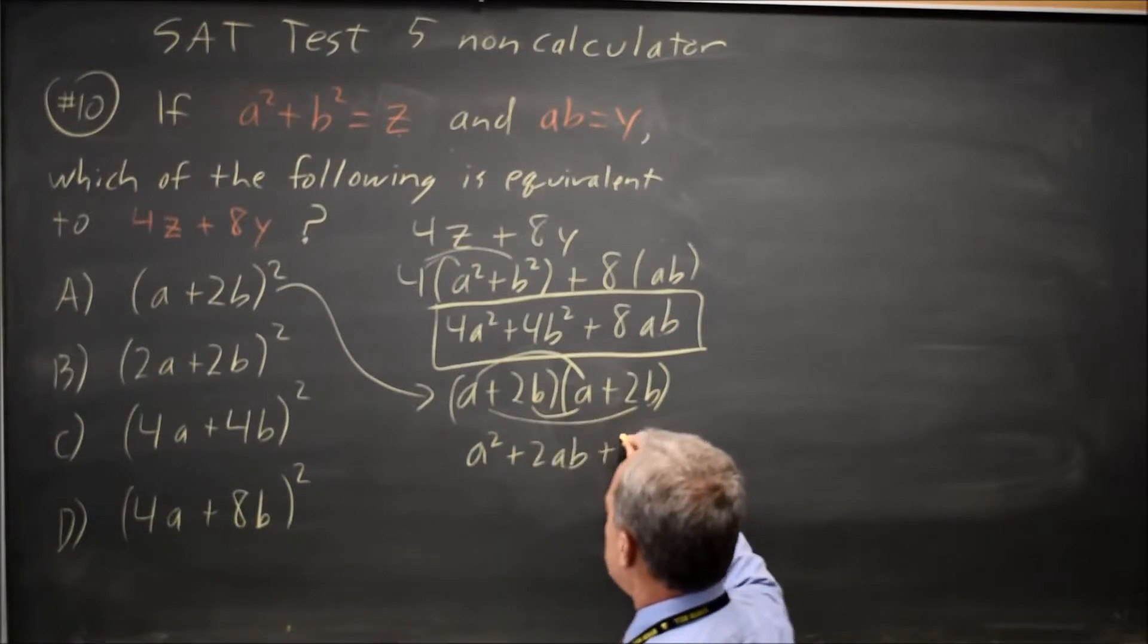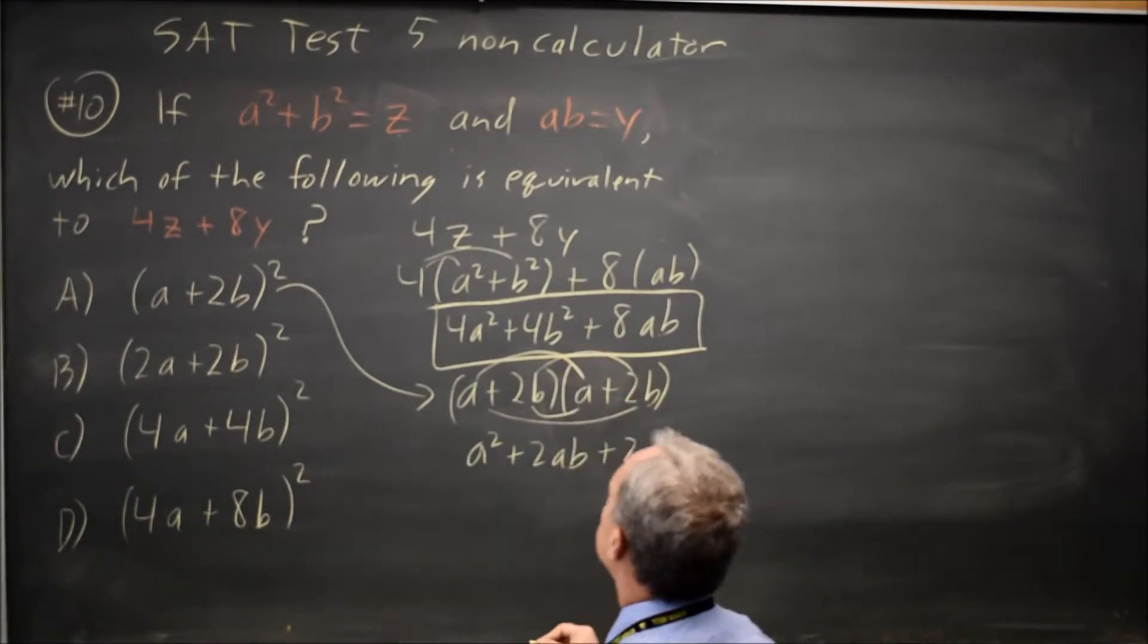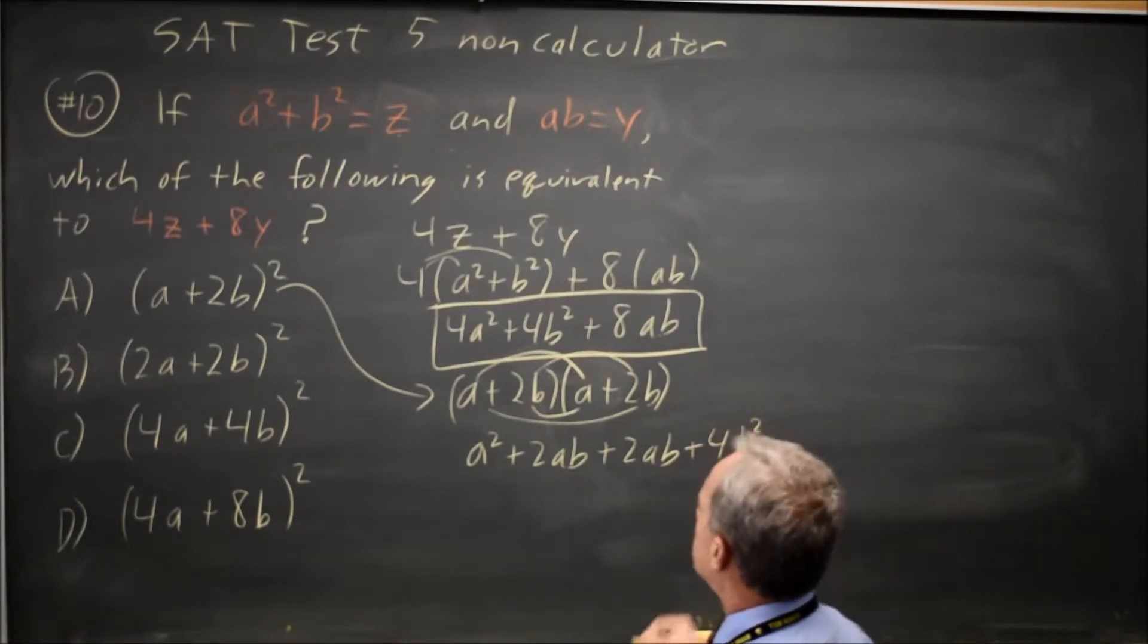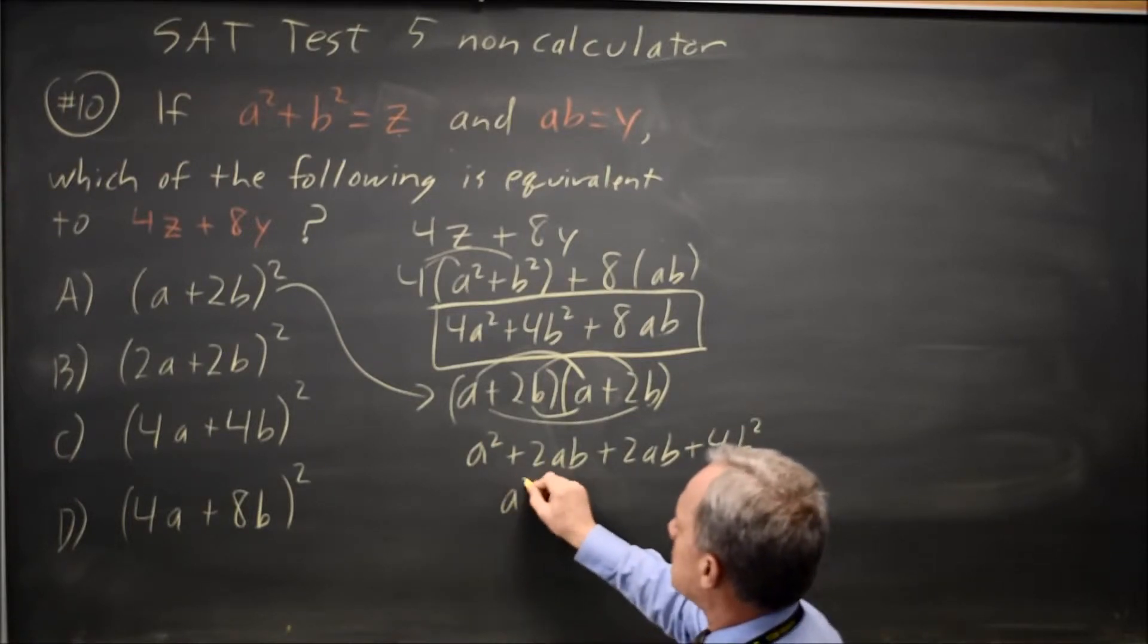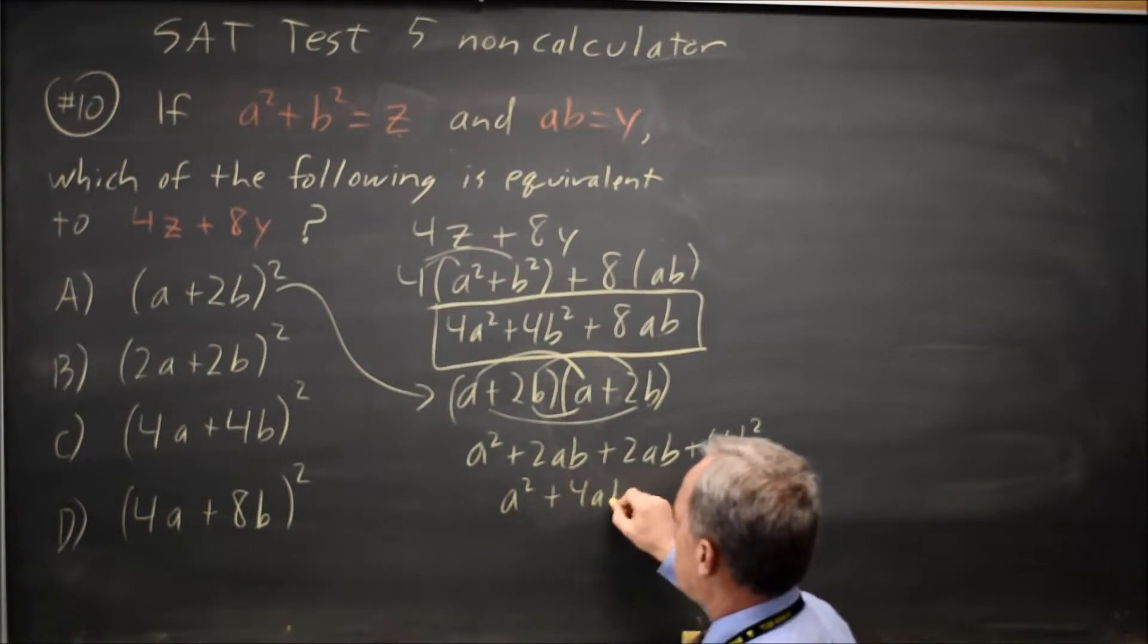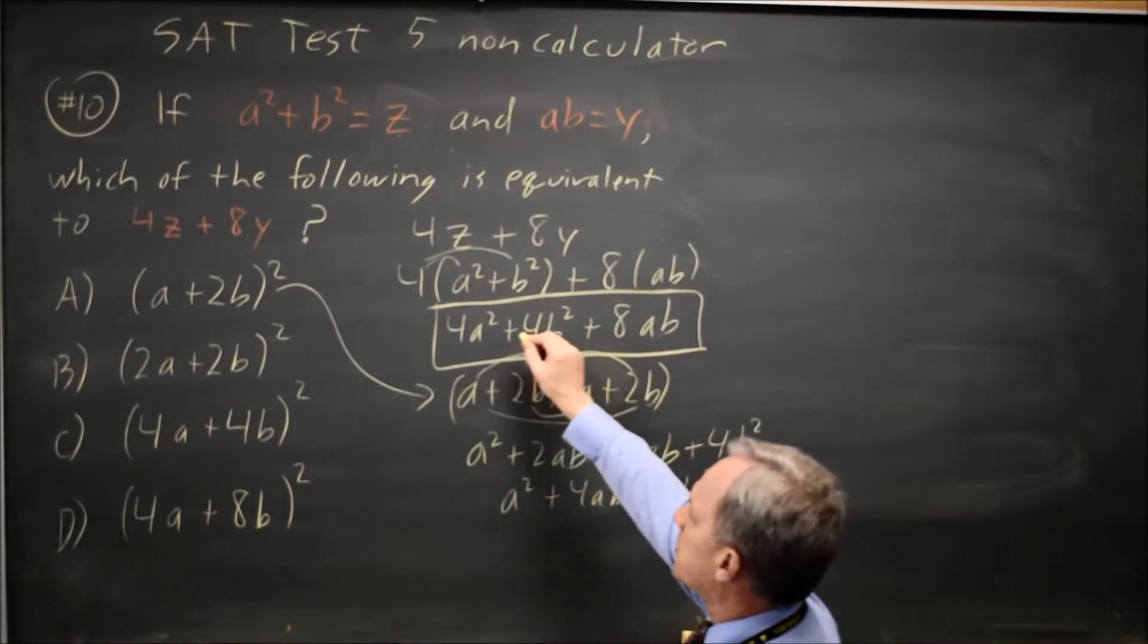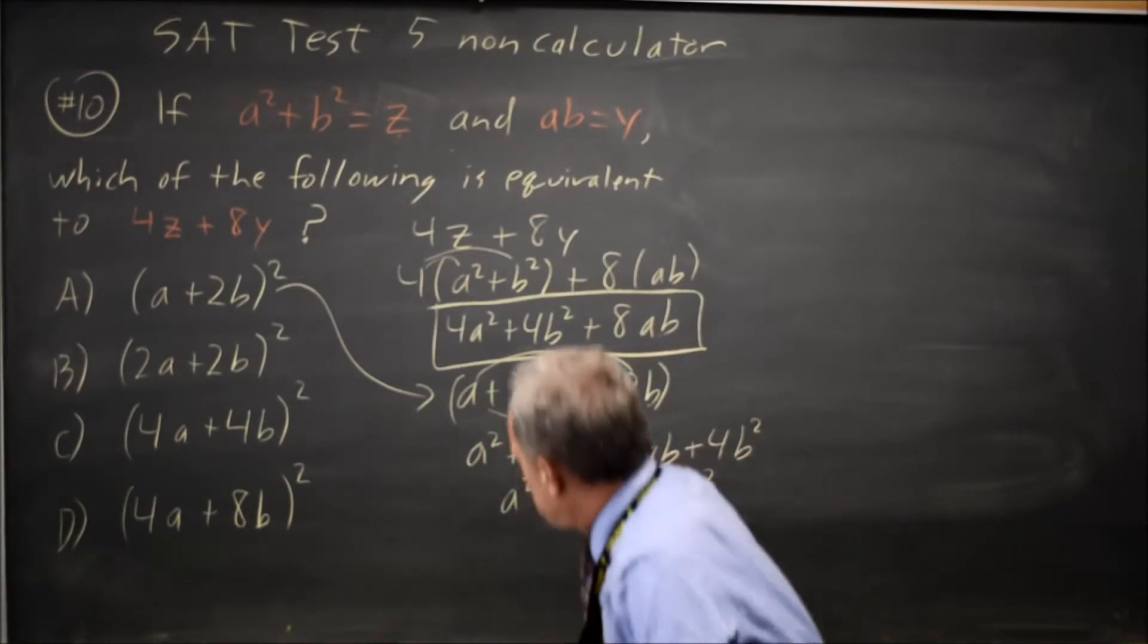Last times last, 2b times 2b. B times b is b squared, and 2 times 2 is 4. So this simplifies to a squared plus 4ab plus 4b squared. Which is not 4a squared plus 4b squared plus 8ab. So choice a is wrong.